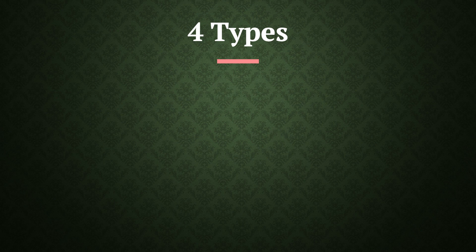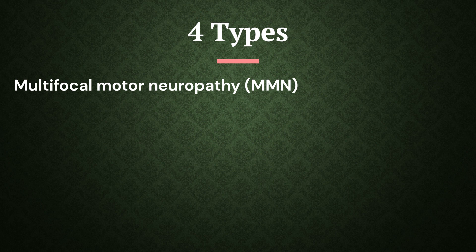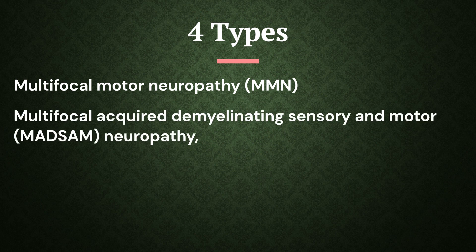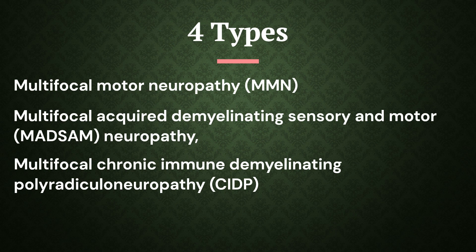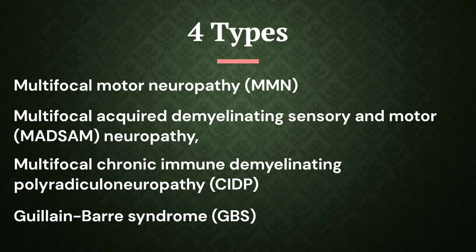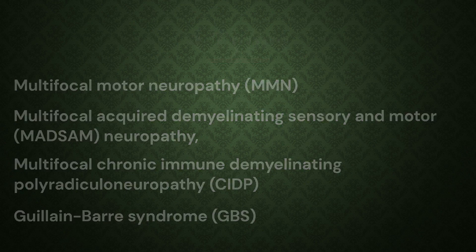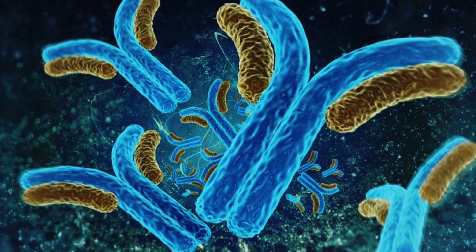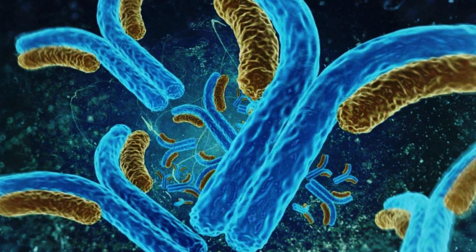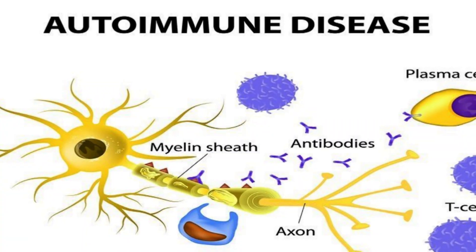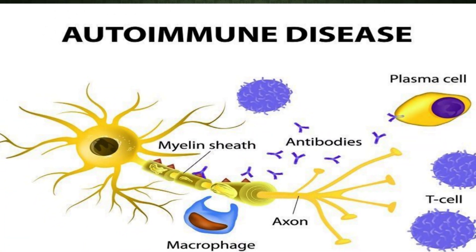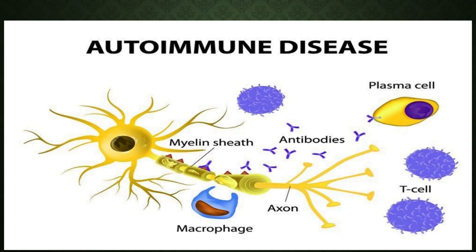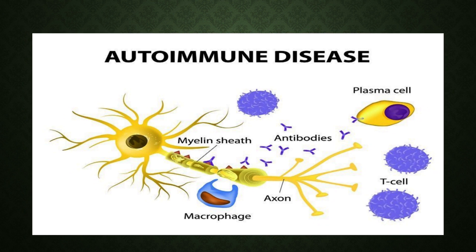There are mainly four types of immune-mediated neuropathies: first is multifocal motor neuropathy; second is multifocal acquired demyelinating sensory and motor neuropathy; third is multifocal chronic immune demyelinating polyradiculoneuropathy; and fourth is Guillain-Barré syndrome. Immune-mediated neuropathy occurs when the body's own immune system generates autoantibodies against gangliosides, which can cause damage to neuronal tissue, leading to various immune-mediated neuropathies.